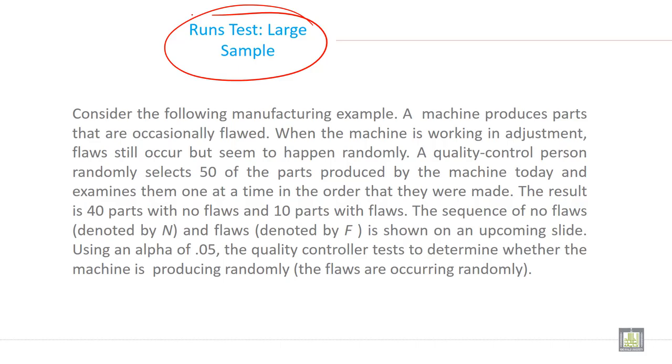Now, how you can do the run test for large sample? Consider the following manufacturing example. A machine produces parts that are occasionally flawed. When the machine is working in adjustment, flaws still occur but seem to happen randomly.